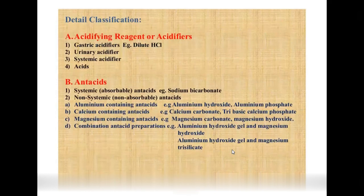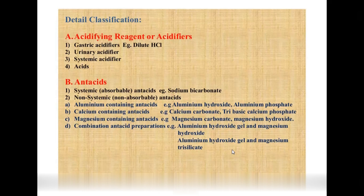Detailed classification of GIT agents: Acidifying agents include gastric acidifiers, urinary acidifiers, and systemic acidifiers — for example, dilute HCl. Antacids are divided into systemic antacids (e.g., sodium bicarbonate) and non-systemic antacids: aluminum-containing (aluminum hydroxide, aluminum phosphate), calcium-containing (calcium carbonate, tri-basic calcium phosphate), magnesium-containing (magnesium carbonate, magnesium hydroxide), and combination antacids such as aluminum hydroxide gel with magnesium hydroxide or magnesium trisilicate.